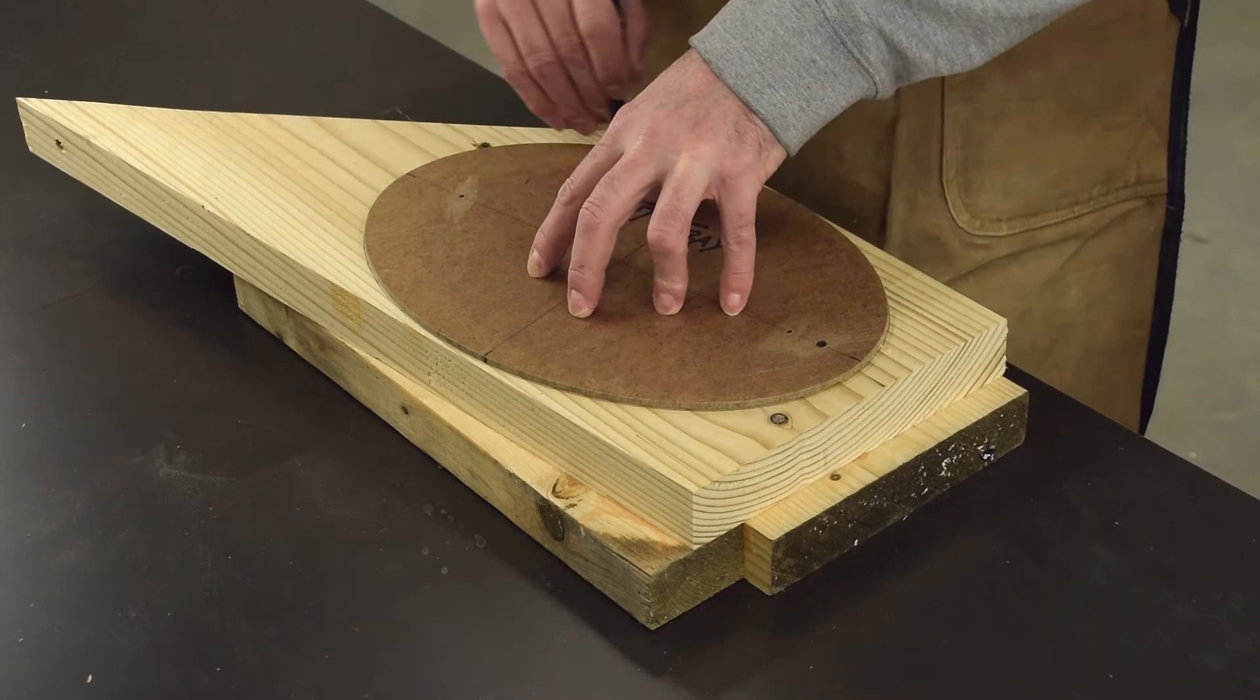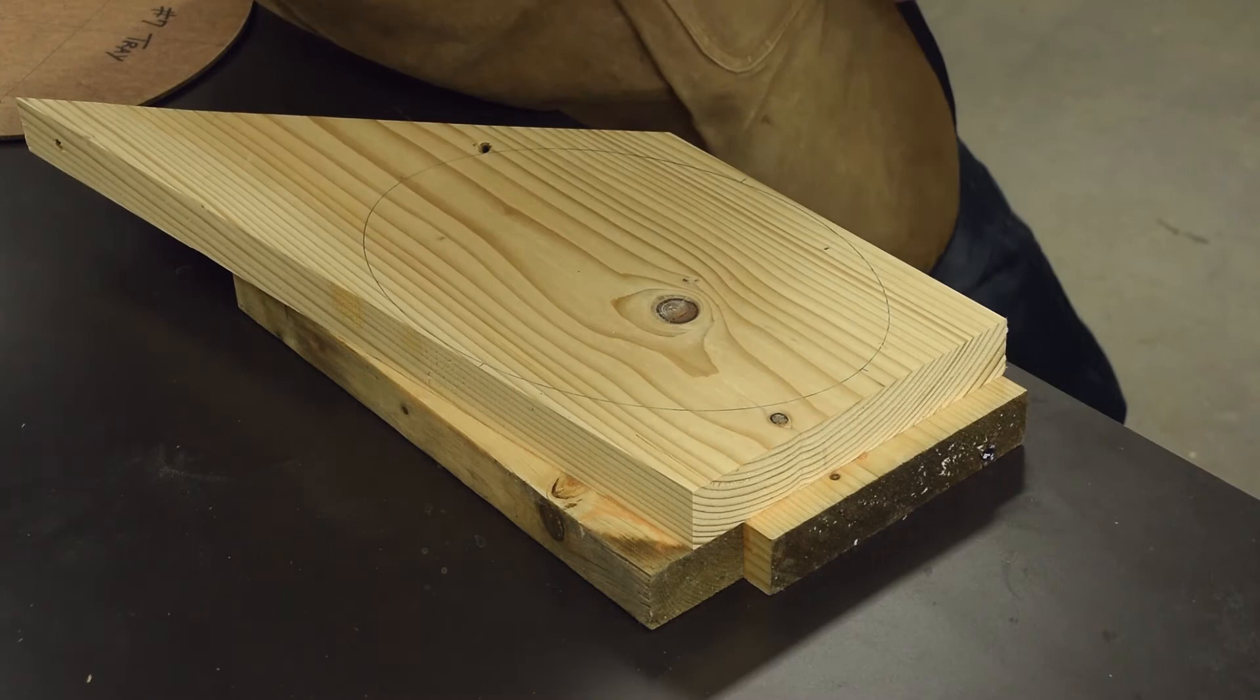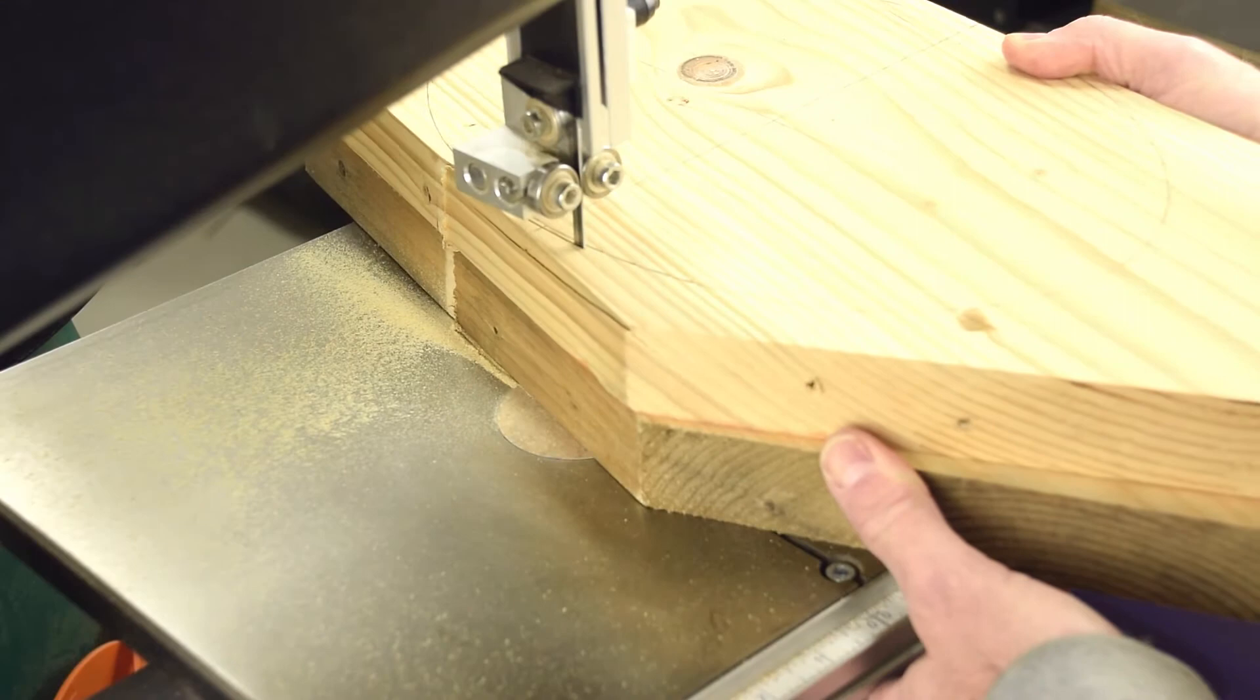All of the oval-shaped components are made from the same number 7 hardboard template that I created. That way, they're all the same size and consistent in shape. I use 2x construction lumber to glue up a blank of sufficient size, making sure to scribe a line for the major and minor axes on the ellipse to keep the bands aligned while bending.